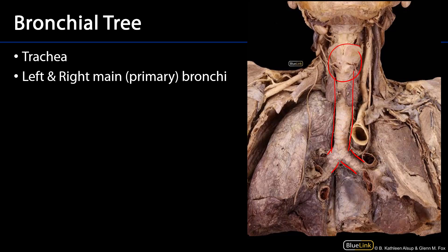There are two lungs, a right and a left lung. The right lung has three lobes — an upper, a middle, and a lower — and the left lung has two lobes, an upper and a lower, and each of these lobes is served by the secondary bronchi. Tertiary bronchi serve bronchopulmonary segments within the lobes.